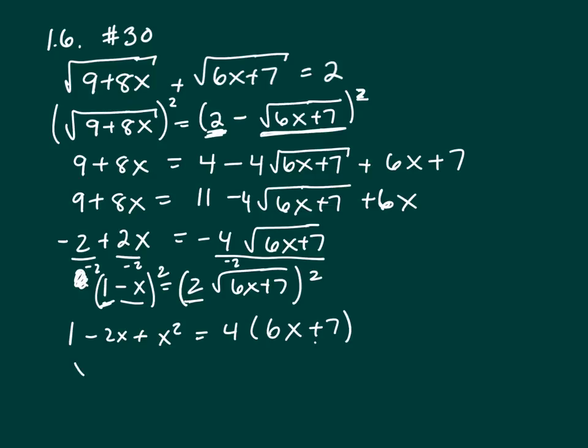So this is a quadratic equation. x squared minus 2x plus 1 equals 24x plus 28. And you know to solve a quadratic, you need to get 0 on one side. So let's move everything to the left. That's x squared minus 26x minus 27 equals 0.